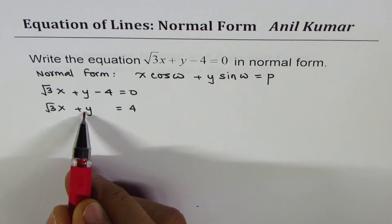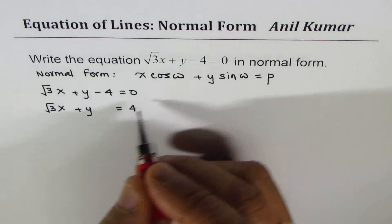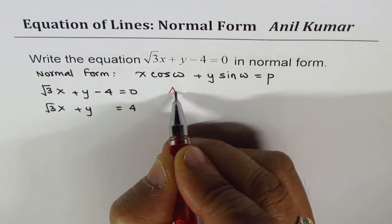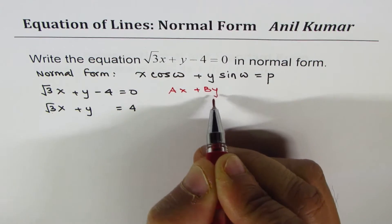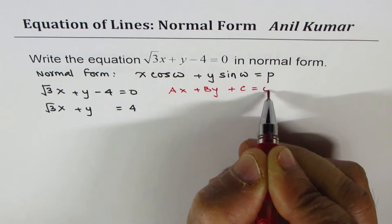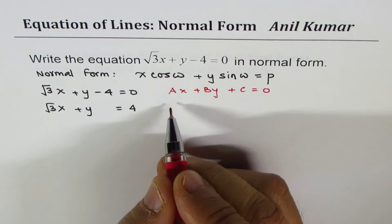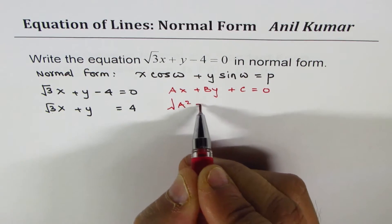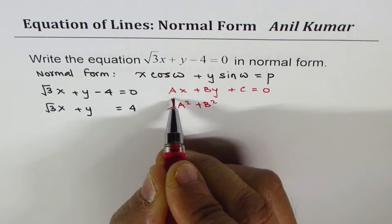These coefficients — in our standard form, which is Ax + By + C = 0 — what we do is divide each term by √(a² + b²).